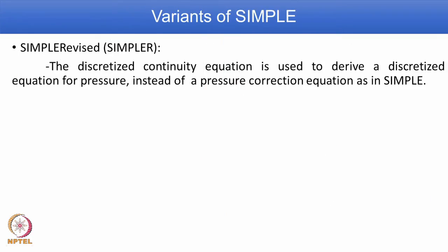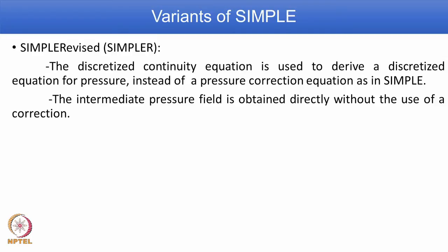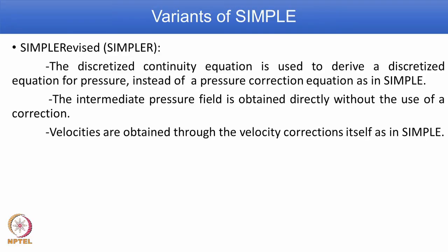There are two variant versions of SIMPLE. The first is known as SIMPLE Revised, or SIMPLER for short. In this, the discretized continuity equation is used to derive a discretized equation for pressure directly, instead of a pressure correction equation as in SIMPLE. The intermediate pressure field is obtained directly without the use of a correction equation. Velocities are still obtained through velocity correction as in the SIMPLE algorithm.